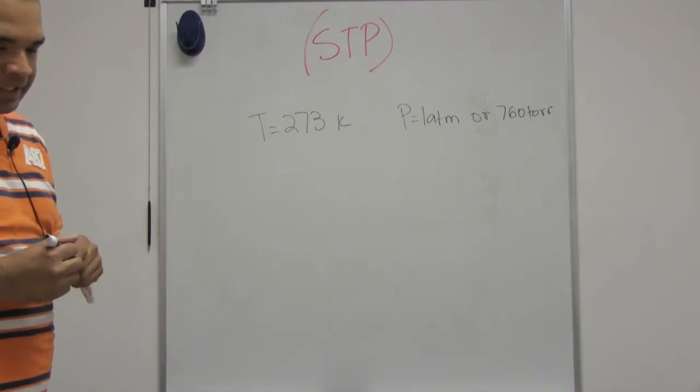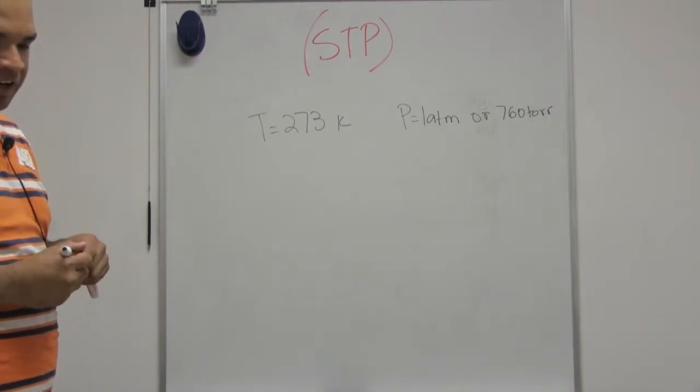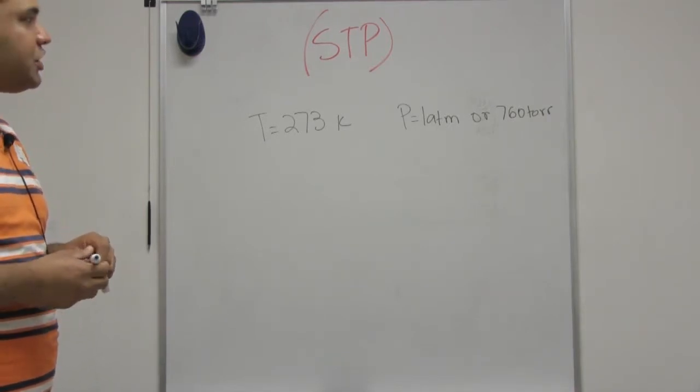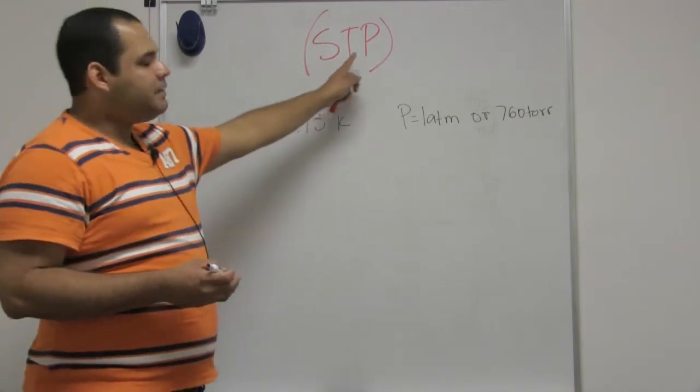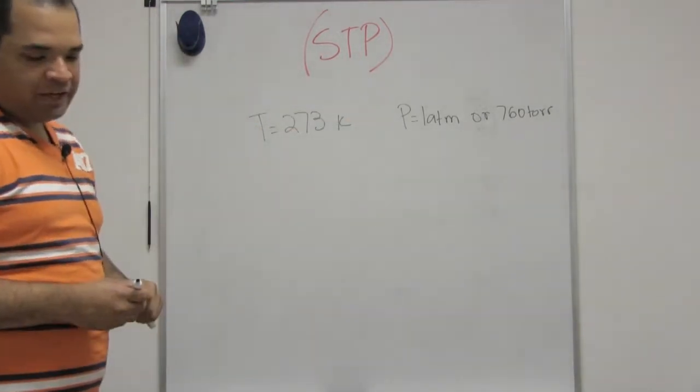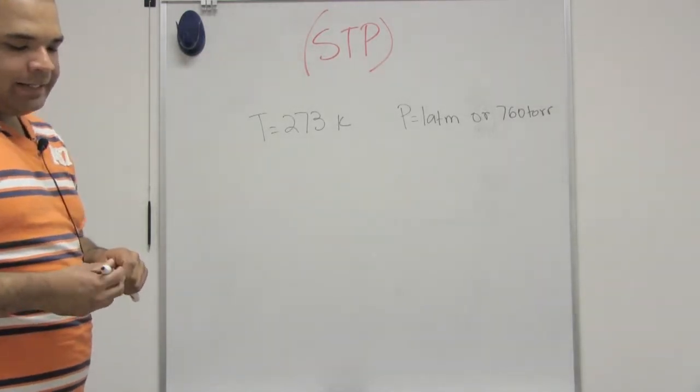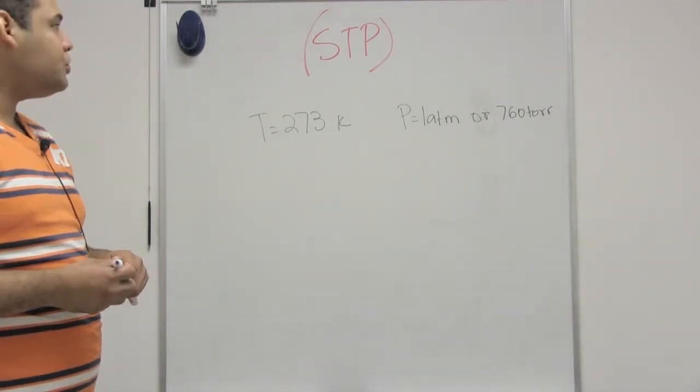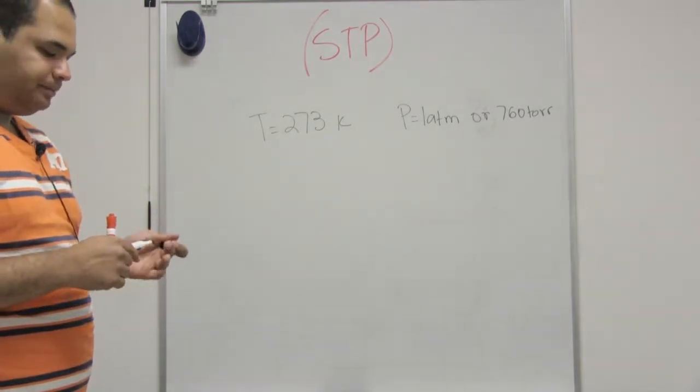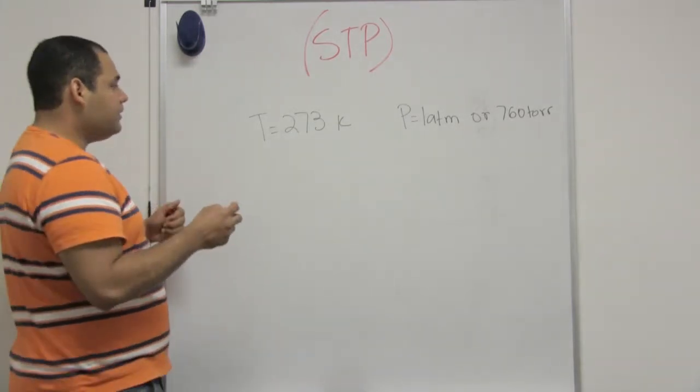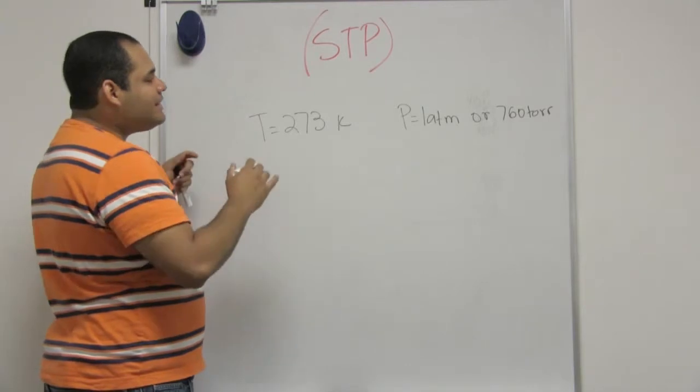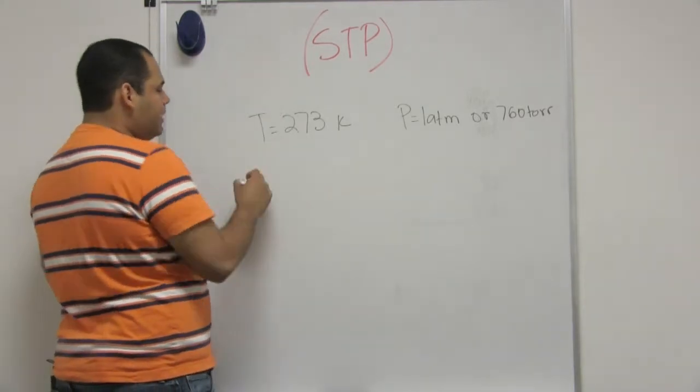So it says here, determine the volume of 45 liters of gas initially at STP if its pressure is increased to 4.21 atm and temperature is decreased to 238 kelvin. So let me write it down here. First of all it says that it's initially in STP.